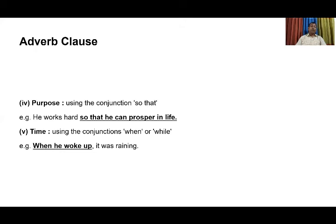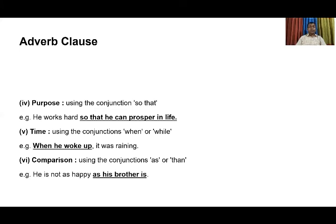And finally, comparison. By using conjunctions as or than. For example: 'He is not as happy as his brother is.' There is a comparison between he and his brother, shown through the adverbial clause 'as his brother is.' So in these six ways — reason, contrast, condition, purpose, time, and comparison — an adverb clause shows its relationship with the independent clause.